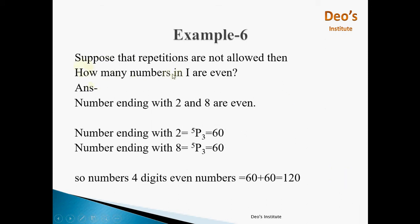Next: how many 4-digit numbers from (1) are even? The digits are 1, 2, 3, 5, 7, 8. Numbers ending with 2 and 8 are even. For numbers ending with 2, the last digit is fixed and we select the first 3 digits from the remaining 5 digits using 5P3, equal to 60. For numbers ending with 8, again 5P3 equals 60. So total even 4-digit numbers equal 60 plus 60, which is 120.